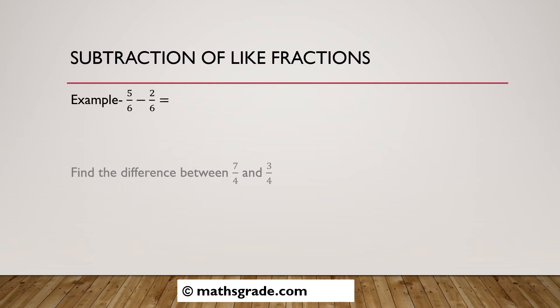The first example is 5 divided by 6 minus 2 divided by 6. We have to subtract 2/6 from 5/6. Both are like fractions because the denominators are equal, that is 6. Both have equal denominators, which is 6.